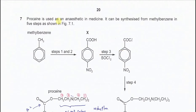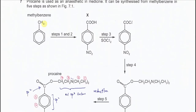Question 7. Procaine is used as an anesthetic in medicine. It can be synthesized from methylbenzene in five steps as shown in figure 7.1. From methylbenzene, it undergoes steps 1 and 2, which are nitration and oxidation of the methylbenzene, to form compound X. We'll discuss further on steps 1 and 2.